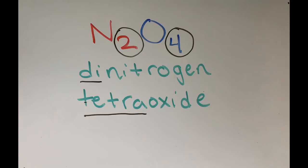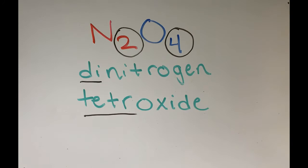The A at the end of tetra can be ignored since it makes it easier to say. So dinitrogen tetraoxide would also work. All the prefixes ending in A can be shortened like this. It just depends on which element it's in front of.